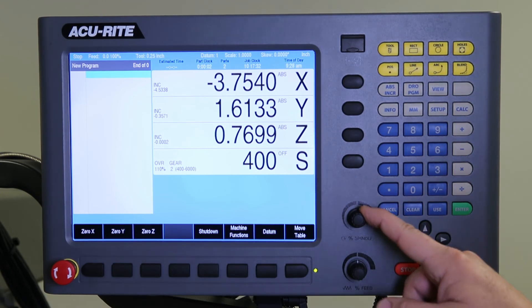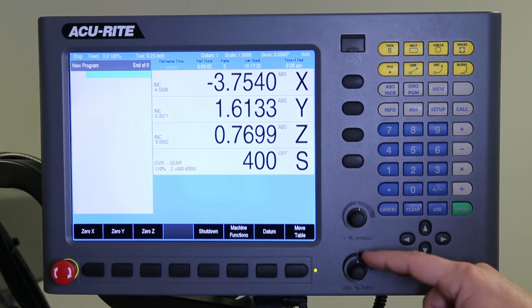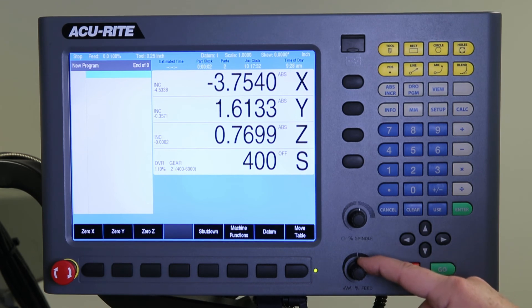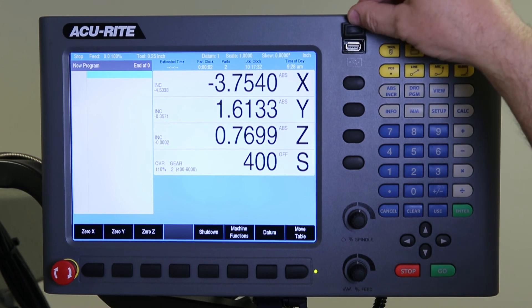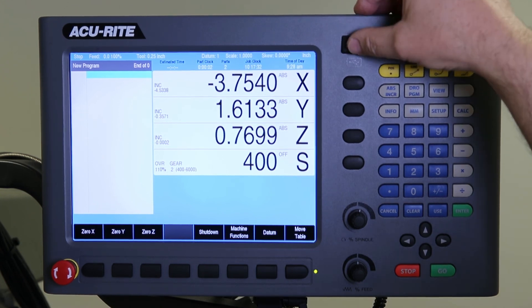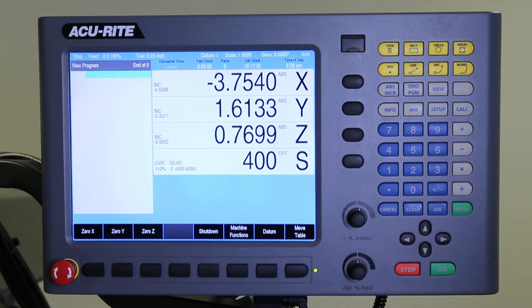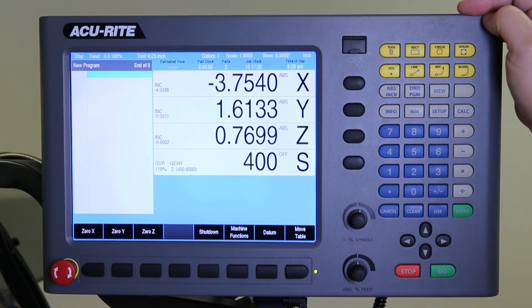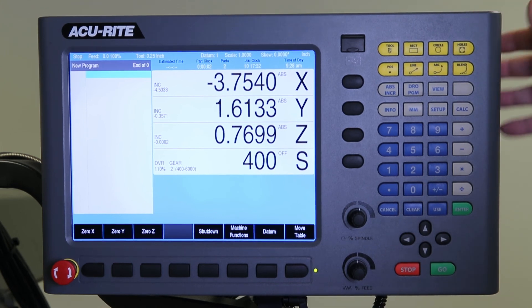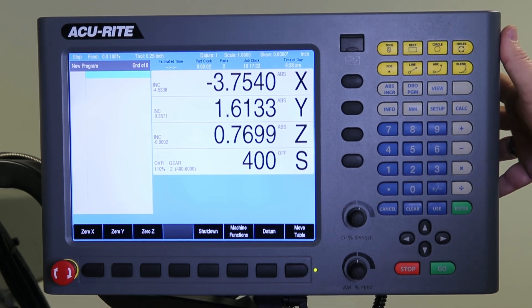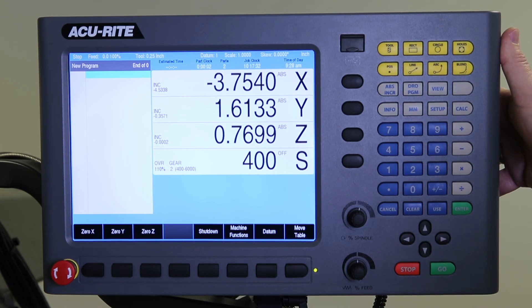We have the feed rate override, your spindle speed override, and also your table feed override here. Table stop button. On the front of the control there's a USB port for saving and storing or loading programs and then also there's an additional USB port on the back of the control that you could hook a USB hub up to and then connect an external mouse or USB keyboard.